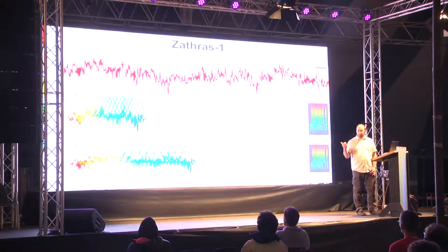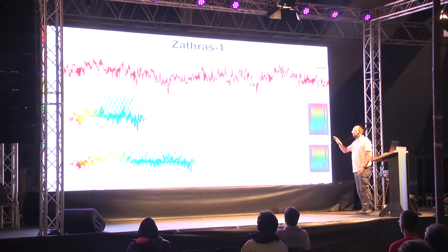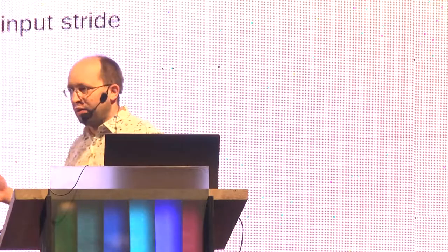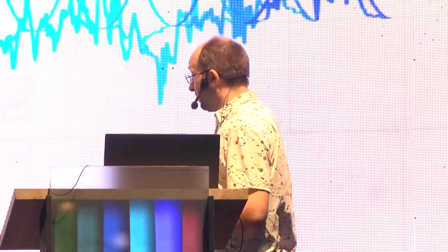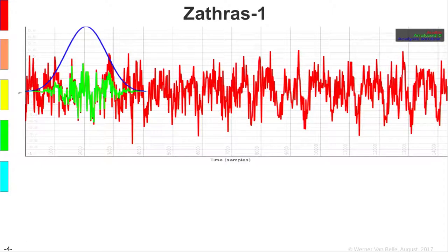For instance, if you have a smaller input stride than output stride, you go slowly through the input. On the other hand, if you go quickly through the input and generate output at a faster pace, you actually go faster than real time.